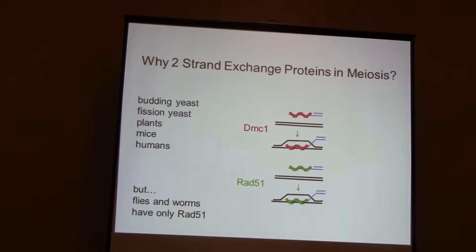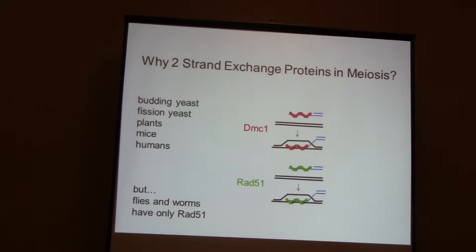The proteins I'm going to tell you about are relatives of E. coli RecA — the central proteins in homologous recombination. They're DMC1, which is a meiosis-specific protein that only functions in meiotic recombination, and Rad51, which is essential both for mitotic and meiotic recombination. They form helical filaments on single-stranded DNA, search for homologous sequences, and create D-loops. Many organisms have this arrangement — budding yeast, fission yeast, plants, mice, and humans — though DMC1 has been lost in flies and worms.